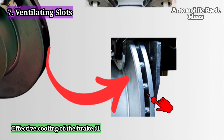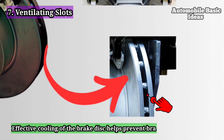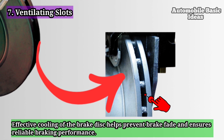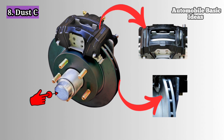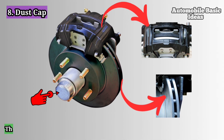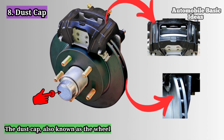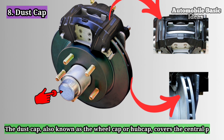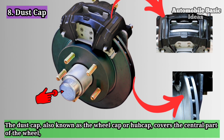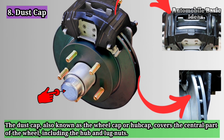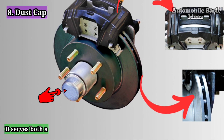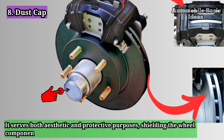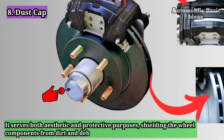Effective cooling of the brake disc helps prevent brake fade and ensures reliable braking performance. Eight: dust cap. The dust cap, also known as the wheel cap or hub cap, covers the central part of the wheel including the hub and lug nuts. It serves both aesthetic and protective purposes, shielding the wheel components from dirt and debris while enhancing the vehicle's appearance.